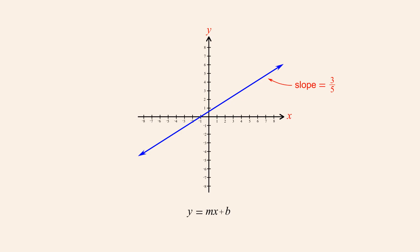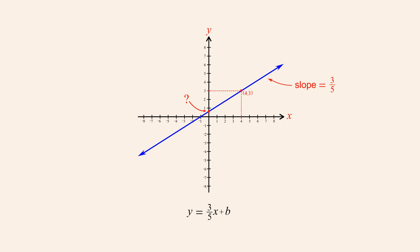We start by assigning the value of the slope, three-fifths, to the constant m. But from looking at this graph, the exact point where the line crosses the y-axis is not obvious, so we don't have an exact value to assign to the constant b. But let's say that we know that the line passes through the point (4, 3).